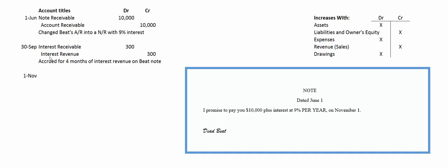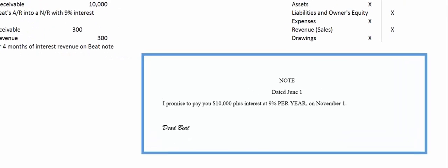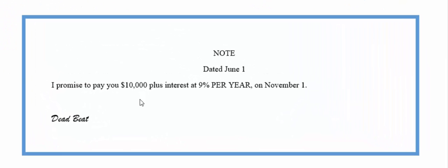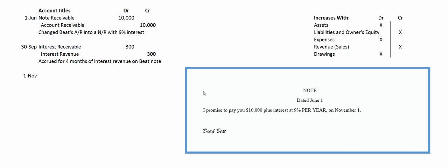Another month has gone by — it's November 1st, so the month of October has passed. It's time for Deadbeat to pay. He's going to pay the original principal of $10,000 plus five months worth of interest: June, July, August, September, October. We've already accounted for four months of that interest revenue, so we only have to account for one more month — $75 more.